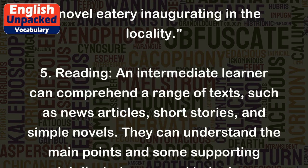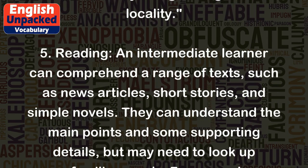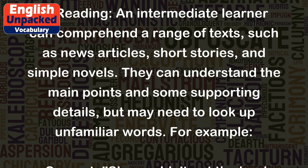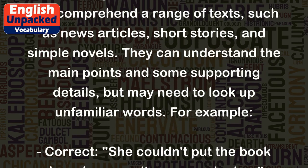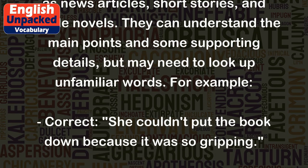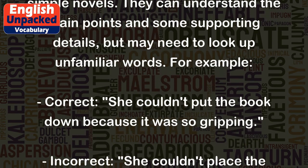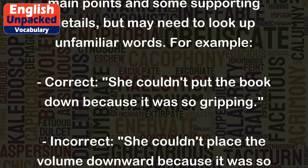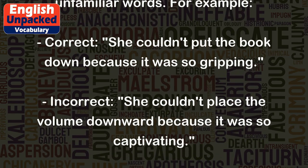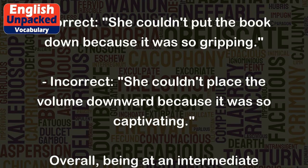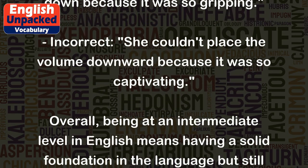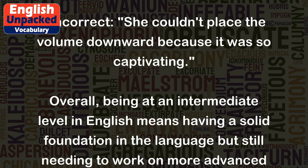Reading: An intermediate learner can comprehend a range of texts, such as news articles, short stories, and simple novels. They can understand the main points and some supporting details, but may need to look up unfamiliar words. For example, correct: 'She couldn't put the book down because it was so gripping.' Incorrect: 'She couldn't place the volume downward because it was so captivating.'